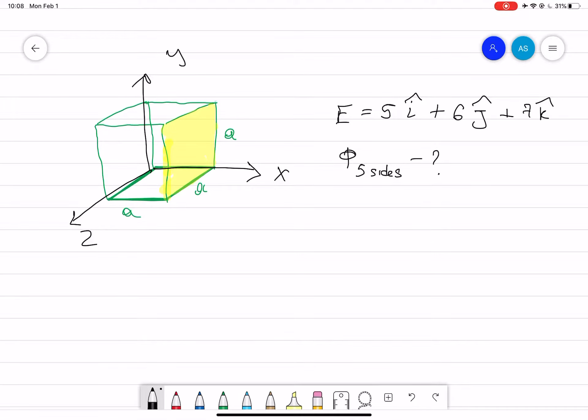Okay students, here we have a problem where we have a cube. The size of the cube is given, let's say it's a. We have a shaded area, and you have to find the total flux that is passing through the five non-shaded areas.